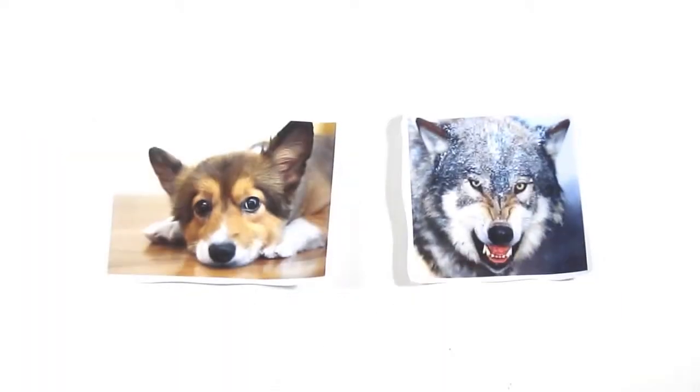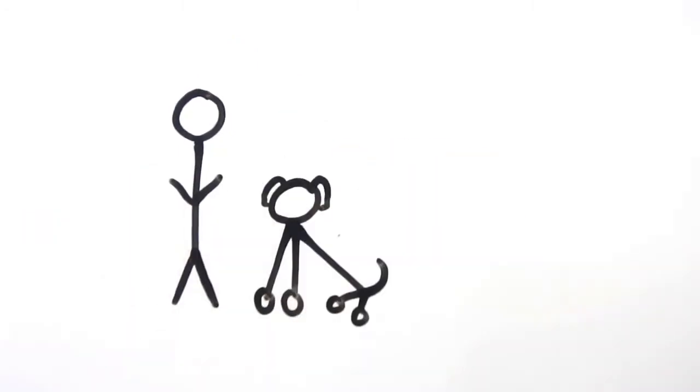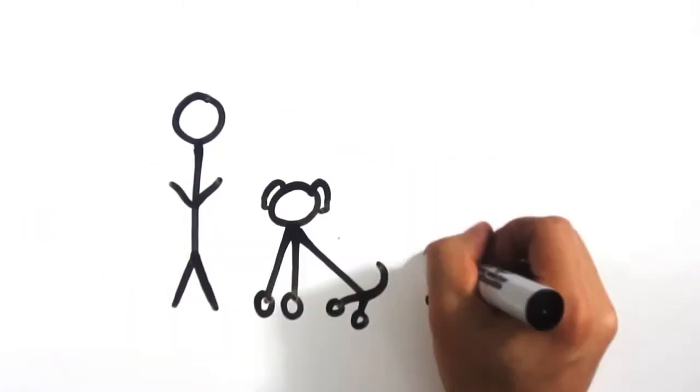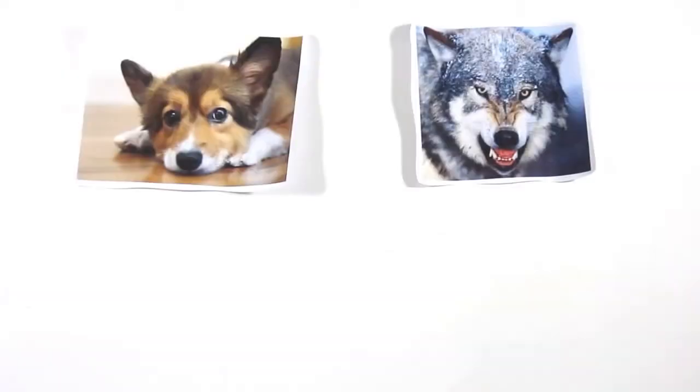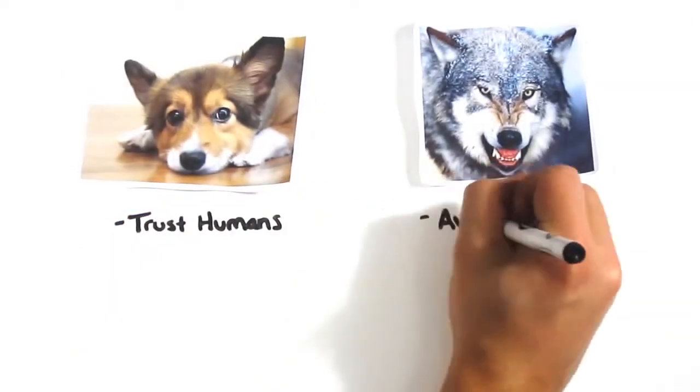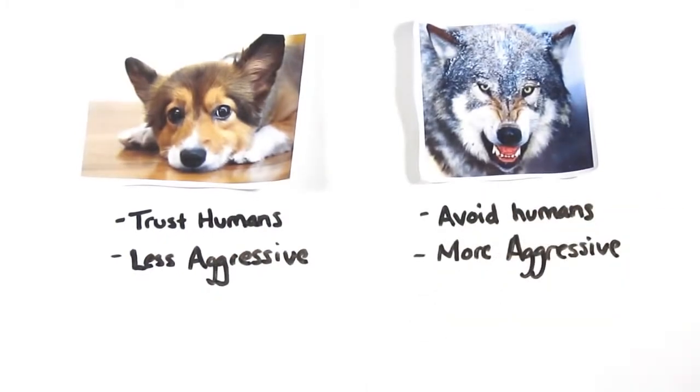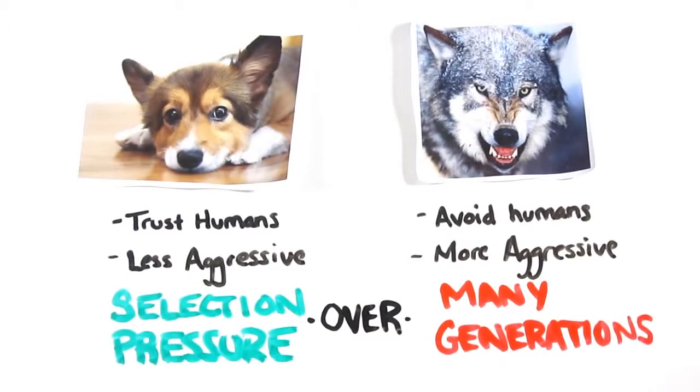Much like how dogs have come from wolves. As humans began to interact with and domesticate wolves, there was no one single point where a wolf gave birth to a dog. But rather, as particular traits came about from selective pressures, such as choosing wolves who were not afraid of humans or ones that were less aggressive, over many generations we can see big genetic and behavioral trait differences.